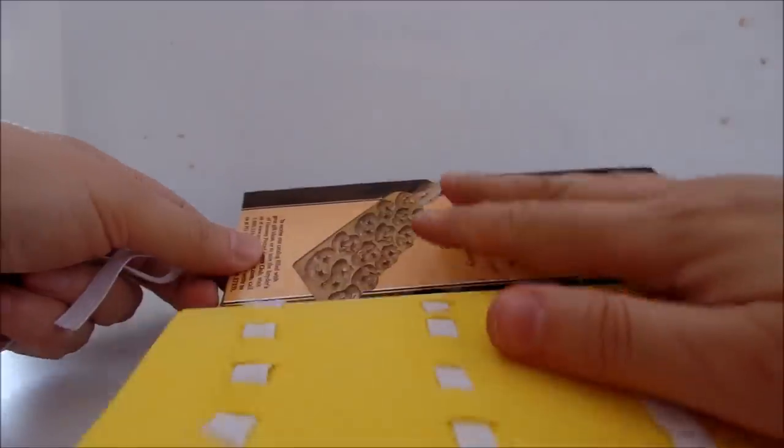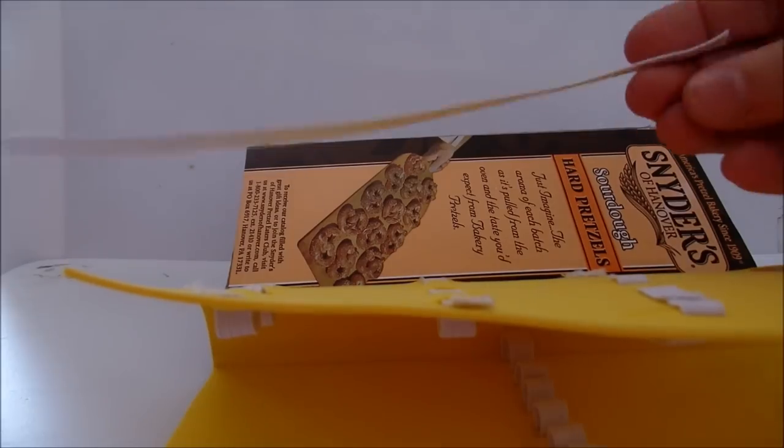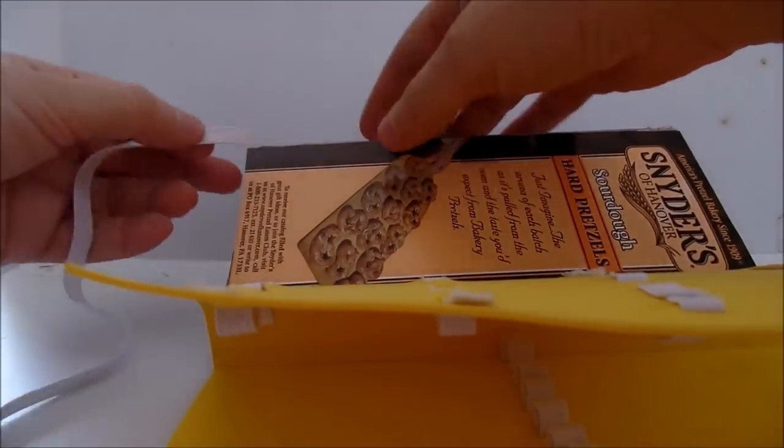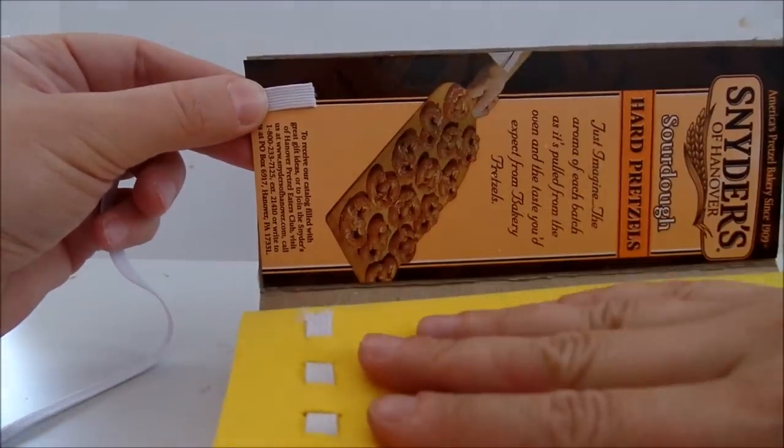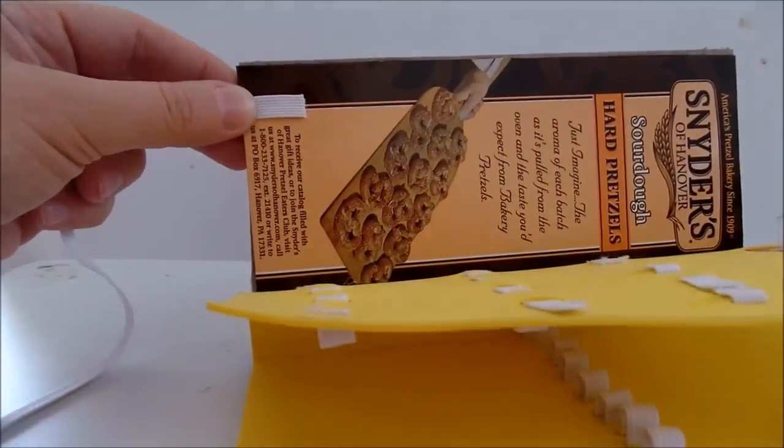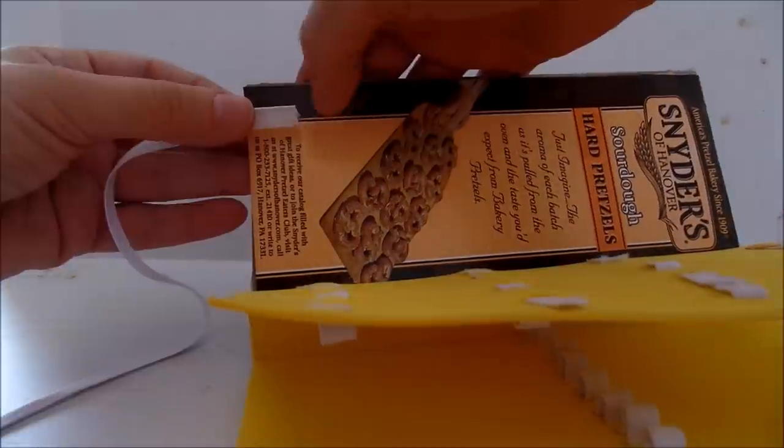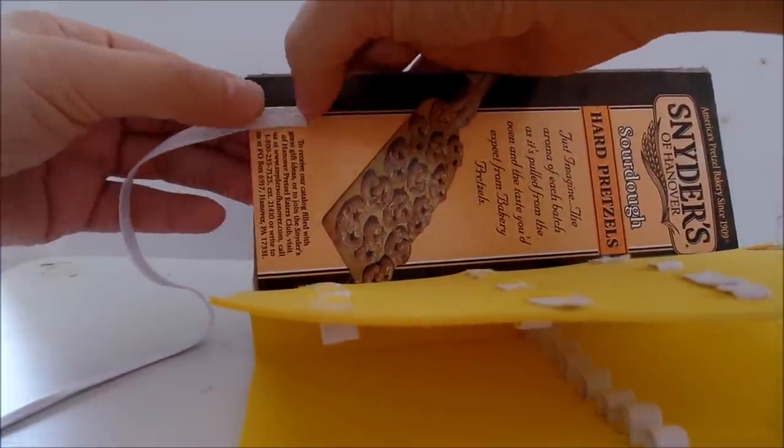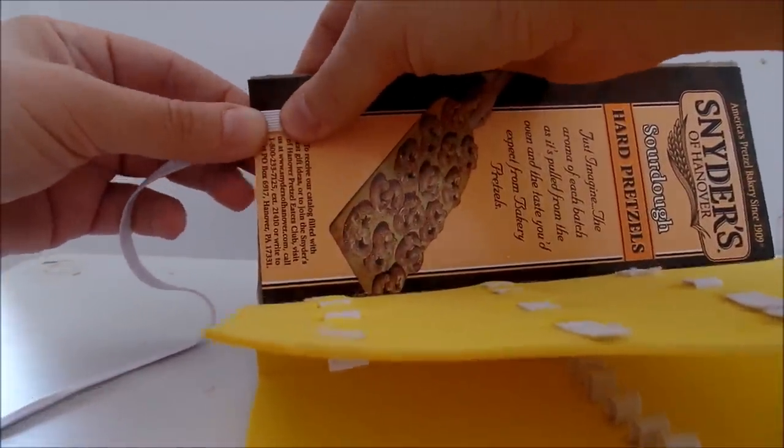Now move on to the second side. Take a piece of elastic and glue it between the foam paper and the cardboard. And this piece of elastic will be used to hold the pieces together.